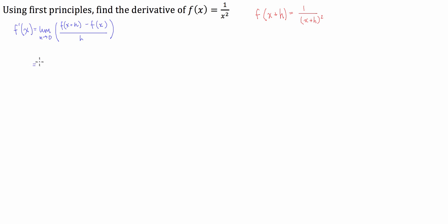So this is going to be equal to the limit as h approaches zero of f of x plus h — which is one divided by x plus h all squared — minus the function of x, which is just one over x squared, all divided by h.